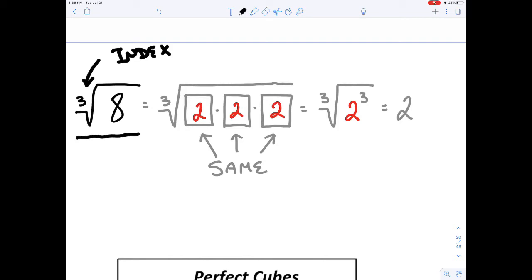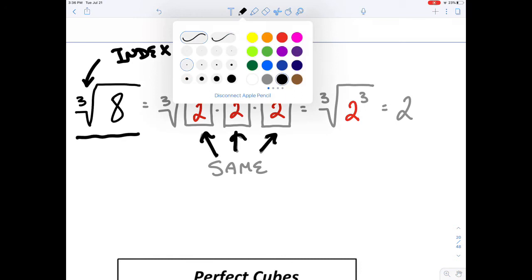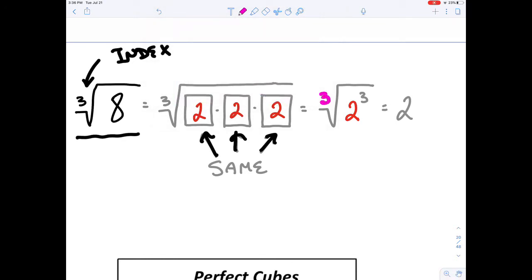Which is to say, what number times itself, times itself, equals 8? And we once again can go ahead and, I'll use pink just like I did before, we can say the cubic root of 8 is 2 to the 3rd power.